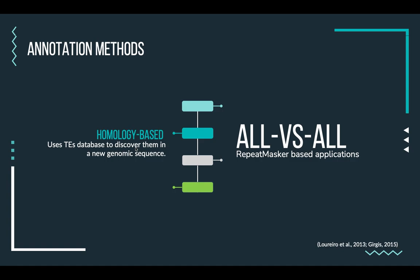RepeatMasker is also part of many annotation pipelines. However, these tools rely on all-versus-all comparisons of the genome against each of the elements of the database, and these comparisons are mainly based on BLAST or BLAST-like applications.